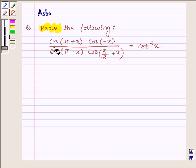Prove the following: cos(π + x) · cos(-x) / [sin(π - x) · cos(π/2 + x)] = cot²x